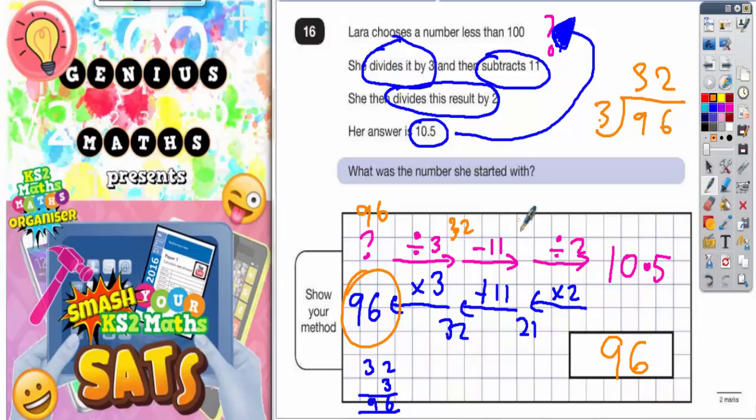32 subtract 11: 2 take away 1 is 1, 3 take away 1 is 2, so that makes 21. And 21 divided by 2: half of 20 is 10.